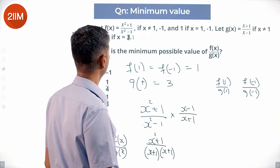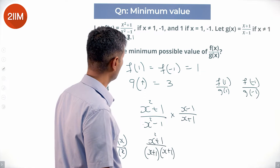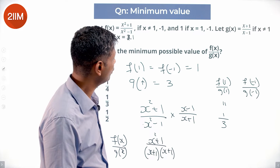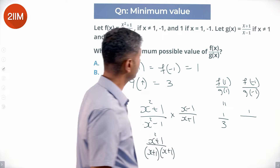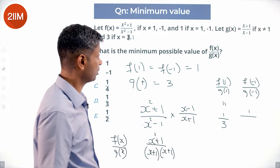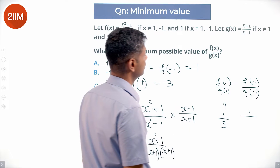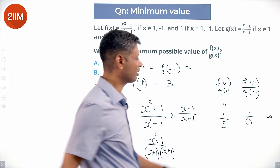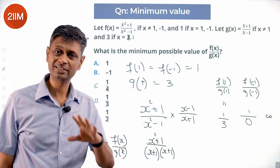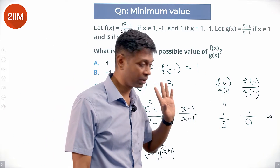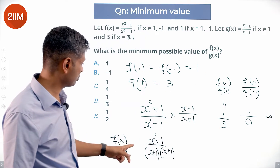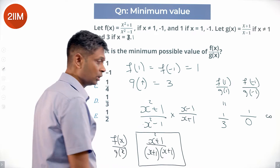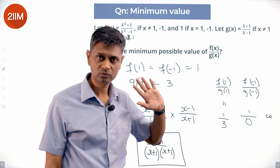Meanwhile, f(1)/g(1): g(1) = 3 and f(1) = 1, so f(1)/g(1) = 1/3. For f(-1)/g(-1): f(-1) = 1 and g(-1) = (-1 + 1)/(-1 - 1) = 0/(-2) — wait, the numerator is 0, so g(-1) = 0. Then f(-1)/g(-1) = 1/0, which is undefined (infinity). So that's not a minimum. The one value I have is f(1)/g(1) = 1/3.